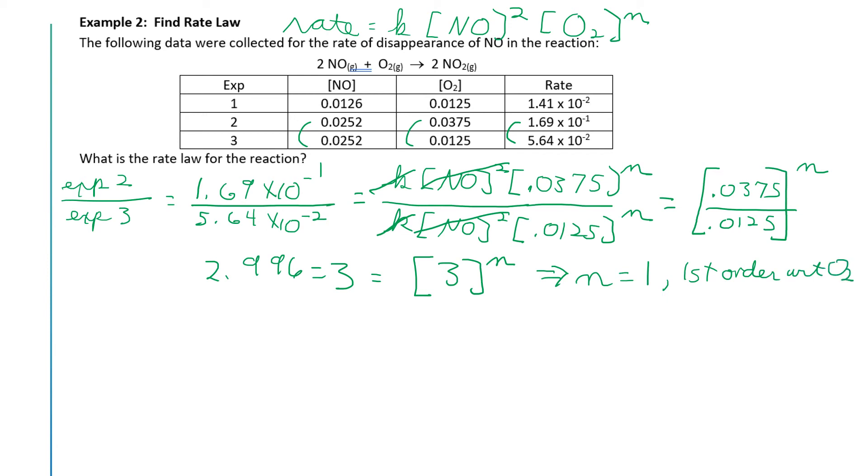Alright, so we now know that our rate law is equal to k times NO squared times O2 raised to the first power. So from that equation at the very top of the page, we can come up with an expression for k. So I'm going to first flip the equation left side and right side. I'm going to have k times NO squared times O2 is equal to the rate. And now to get k by itself, I'm going to divide both sides by NO squared and O2. So k is equal to the rate divided by NO quantity squared and O2.